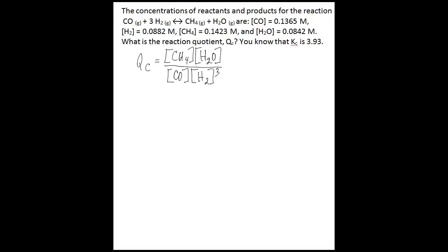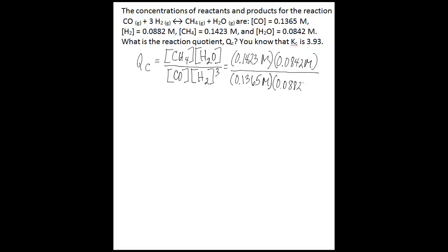So let's go through this problem. We're given these concentrations and I'm going to substitute them into the QC equation. The concentration of methane is 0.1423 molar, multiplied by the concentration of water, which is 0.0842 molar, divided by the concentration of carbon monoxide gas, which is 0.1365 molar, multiplied by the concentration of hydrogen gas, which is 0.0882 molar, raised to the third power. If you do the math, you get a result of QC equal to 128, to three significant figures.